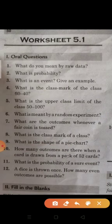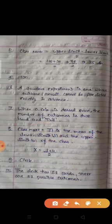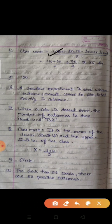Question 4: what is the class mark of the class 30 to 40? So class mark is upper limit plus lower limit upon 2. So upper limit is 40 and lower limit is 30.